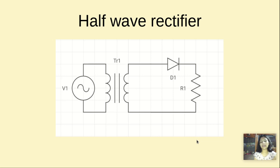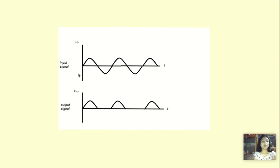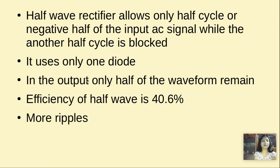To understand this better, let us look at a graph. This is the graph where we apply the input signal, and this is the graph where we get the output signal in case of a half-wave rectifier. We can see that in the output signal we get only the positive cycle, but the negative cycle is cut off. So basically, a half-wave rectifier allows only the positive half cycle of the input AC signal, while the other half cycle is blocked. It uses only one diode, and the efficiency of half-wave rectifier is 40.6%. It contains more ripples.